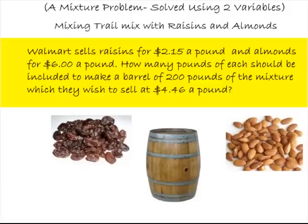The idea behind this is that no matter how many pounds of raisins or almonds in that 200-pound mixture we sell, we're going to be making the same amount of money for the 200-pound mixture as we were if we're going to sell the items separately for their original prices of $2.15 a pound and $6 a pound. Let's take a look at the solution here.